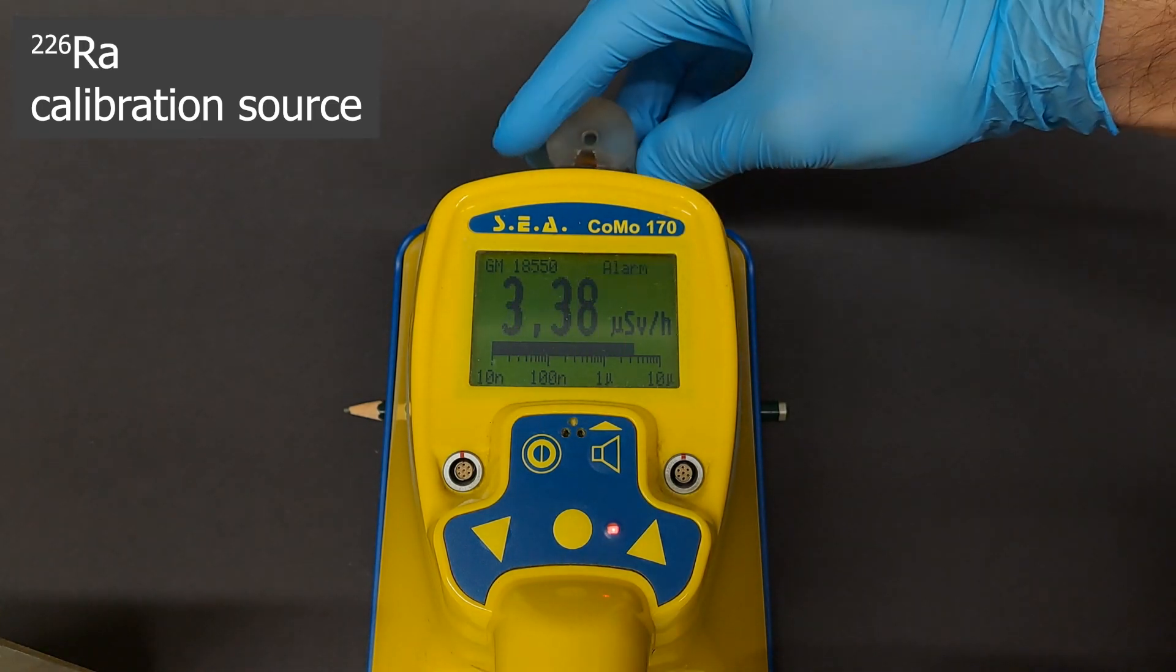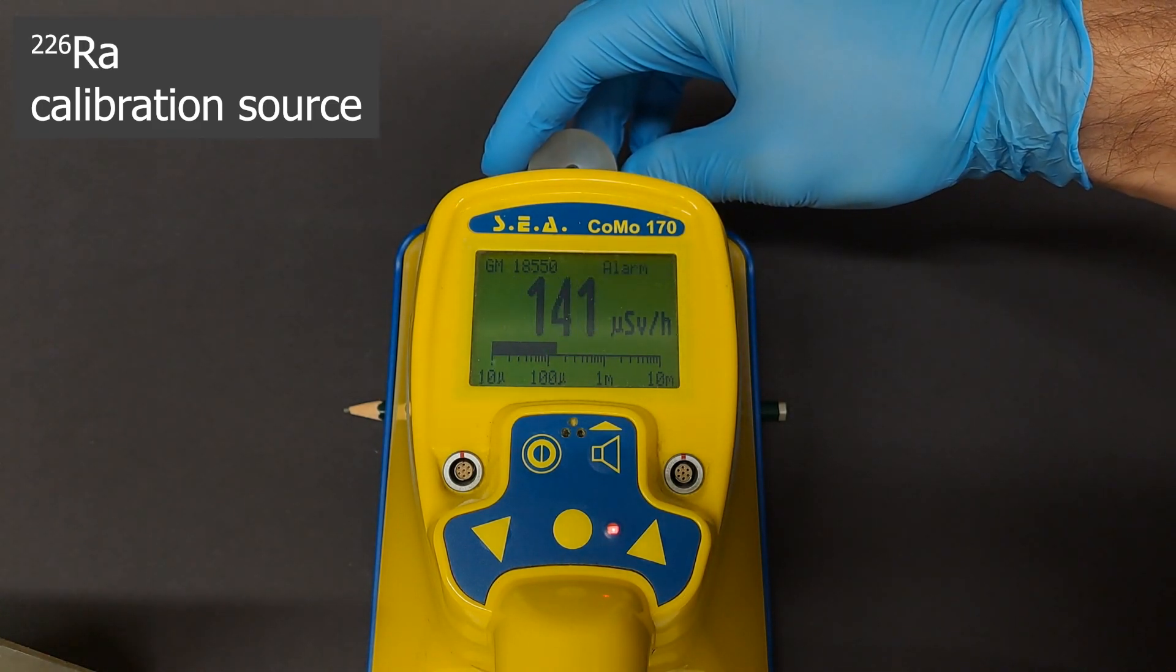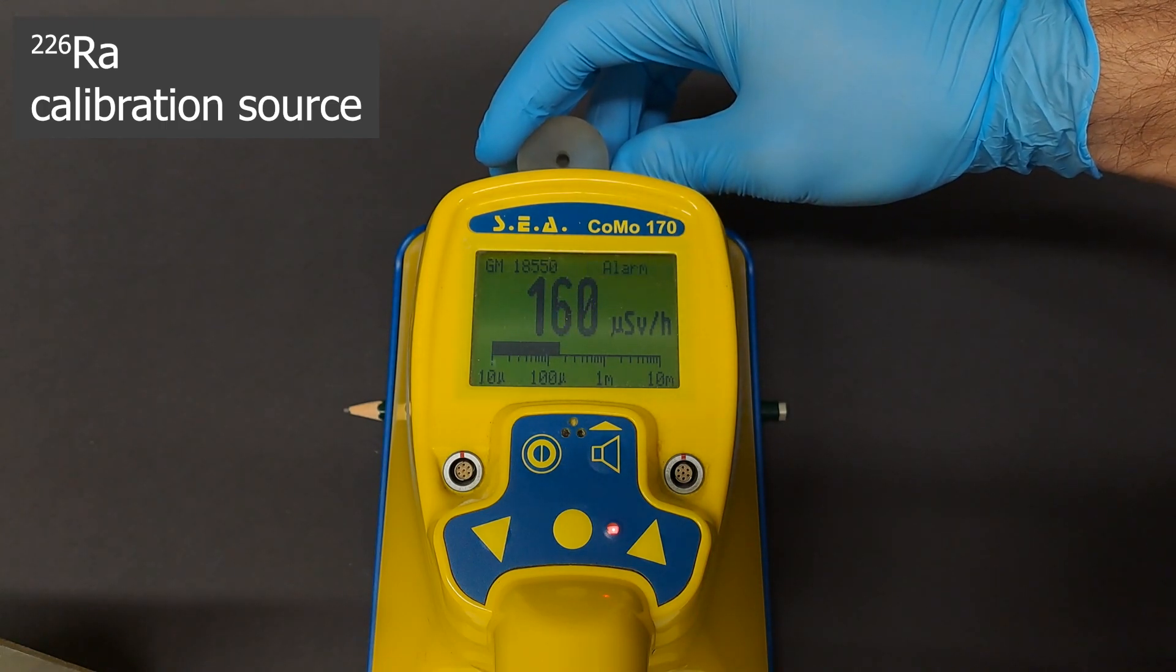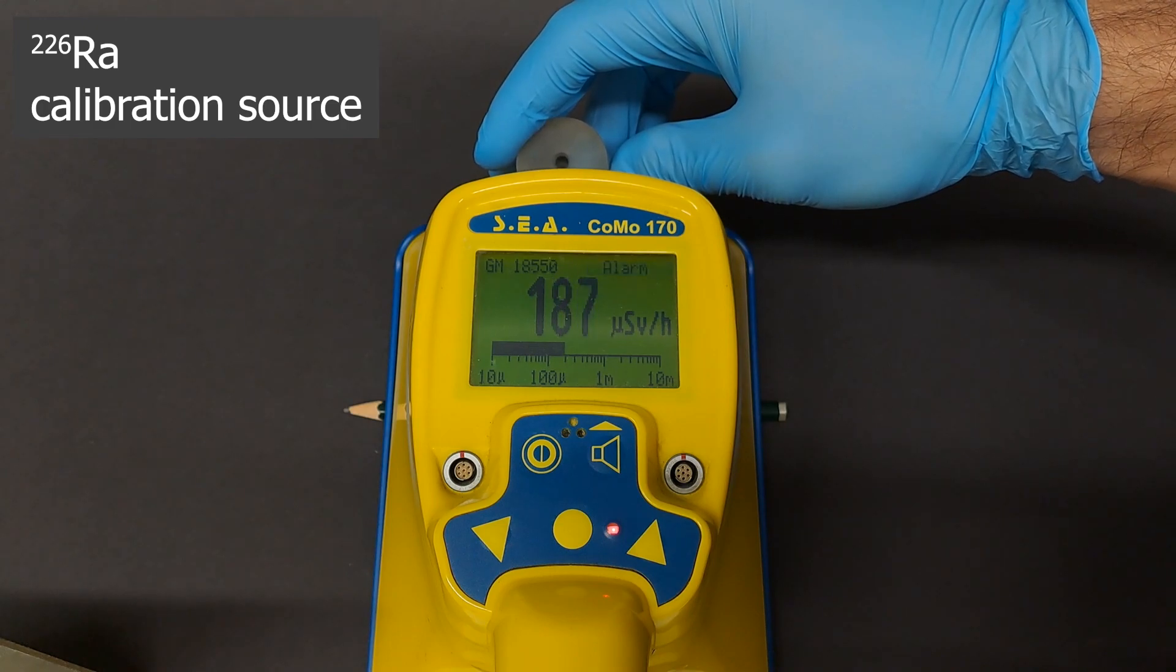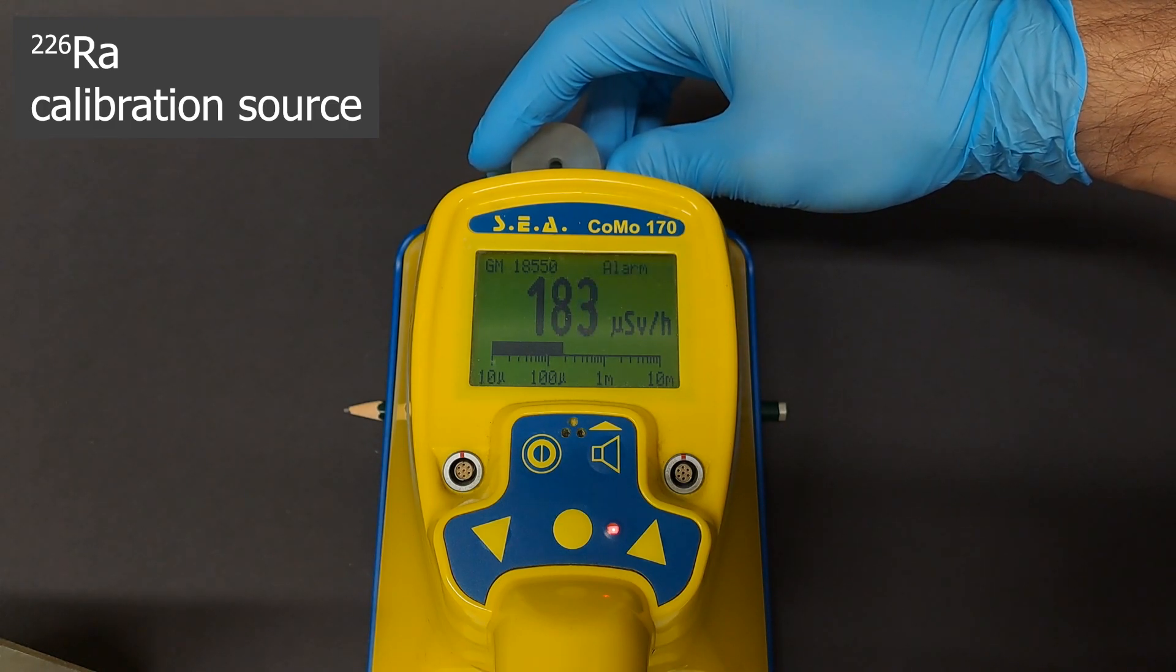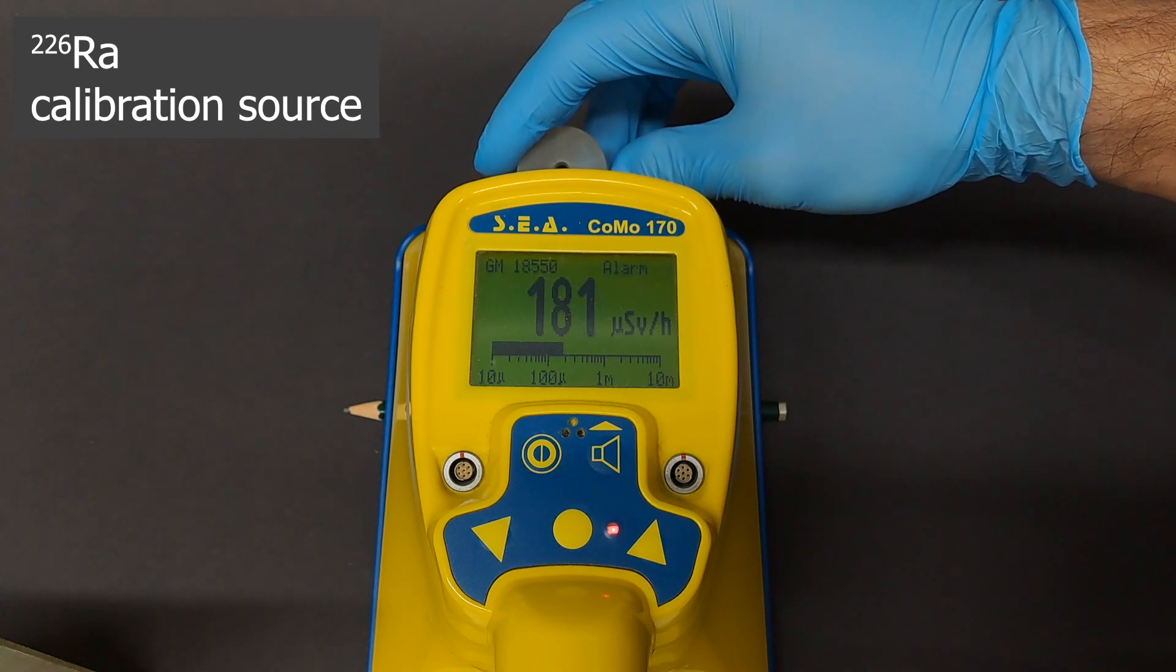Last but not least, Radium-226. While it's primarily an alpha emitter, it also has gamma lines with a probability of around 3%. This sample is embedded in resin, so the alphas do not escape. We reach a maximum value of 184 microsieverts an hour.